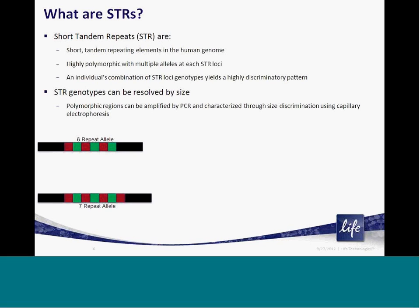If these alleles are amplified by PCR, the resulting fragments can be resolved by capillary electrophoresis and their size can be assessed to generate a genotype of the allele. Due to the high degree of polymorphism at the different loci, each individual, or cell donor, contains a highly unique combination of these alleles at their different STR loci, and this combination generates a unique genetic profile for the individual or cell.